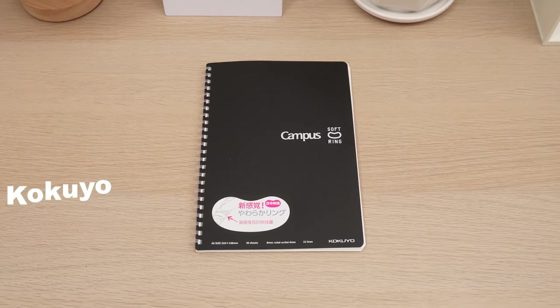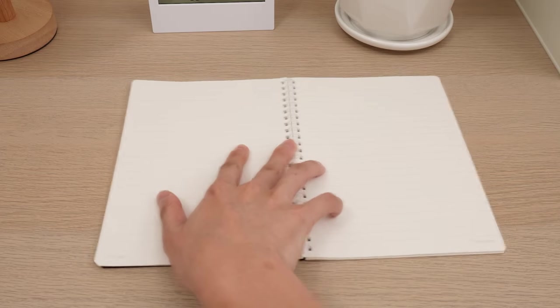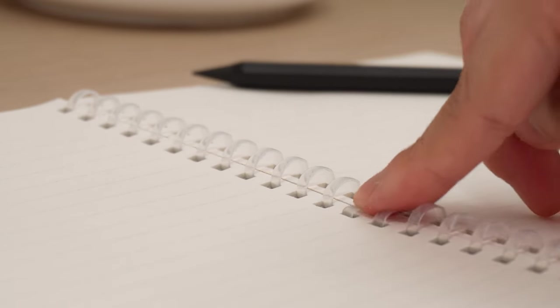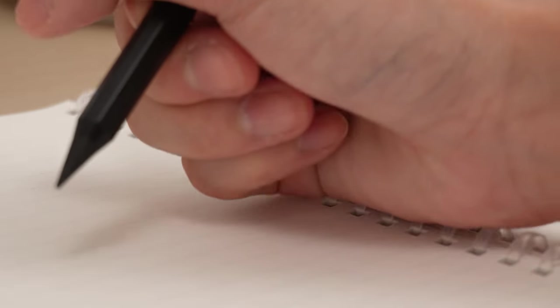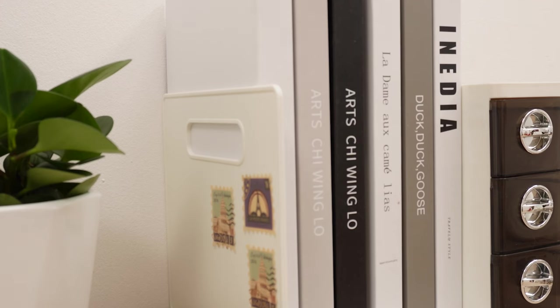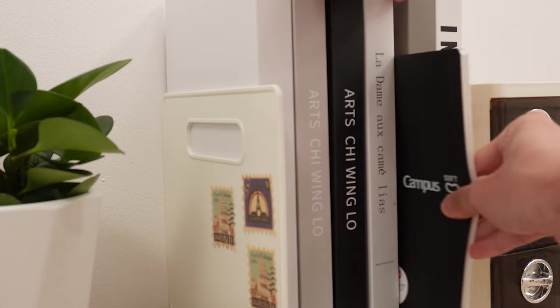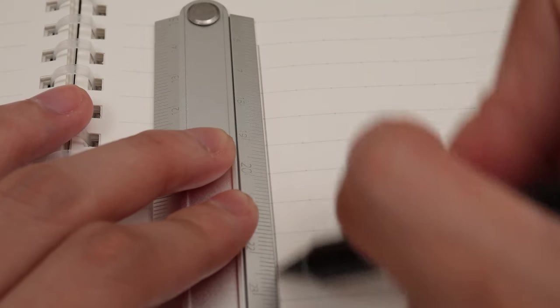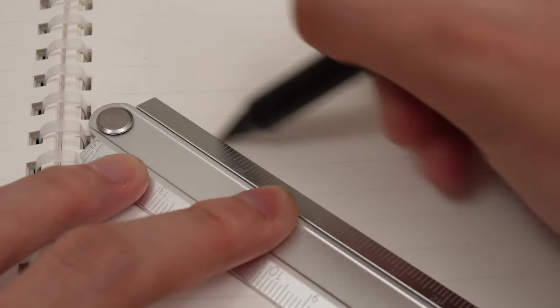Lastly, the Kokuyo Campus Soft Ring Notebook, a unique twist on traditional ring-bound notebooks. Instead of hard rings, it uses soft, flexible rings, offering a comfortable writing experience. These soft rings quickly return to shape, and they easily fit into tight spaces without causing any disruptions, even when the notebook is compressed. The dotted pages are perfect for drawing and creating tables, adding convenience to your note-taking and creative work.